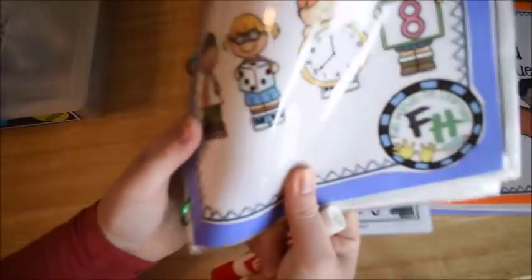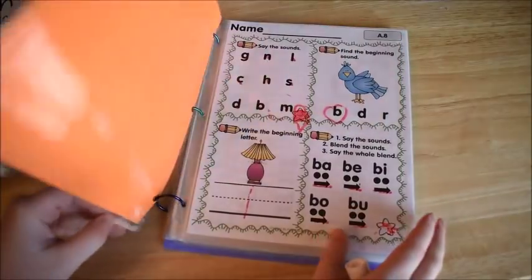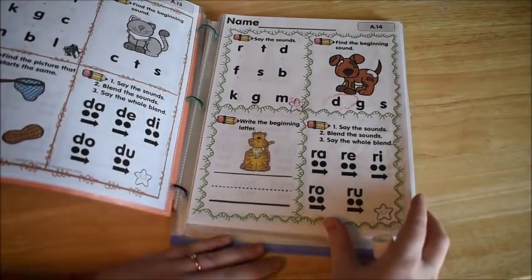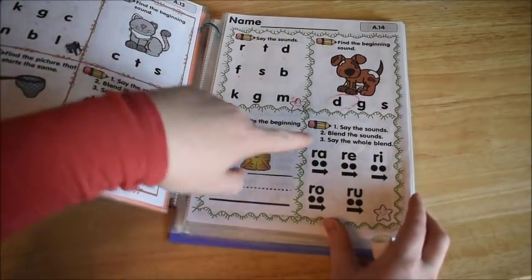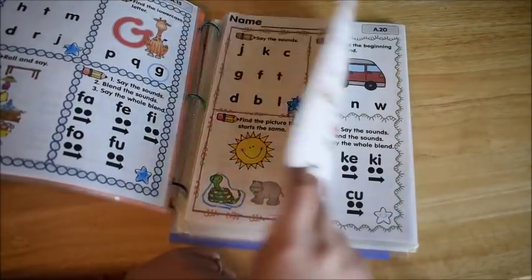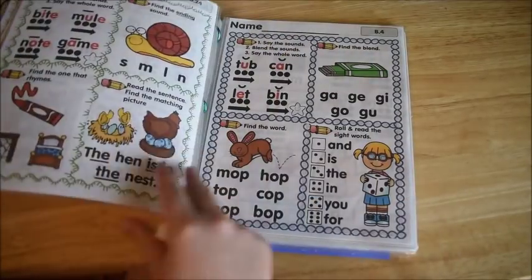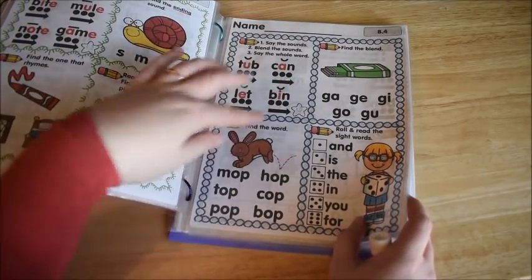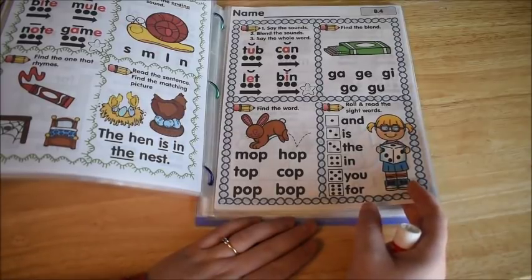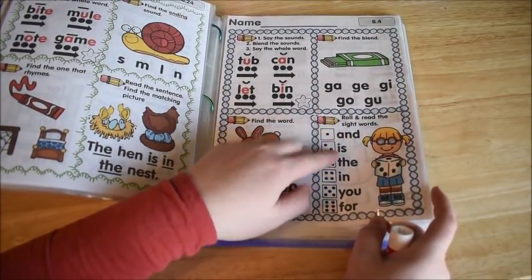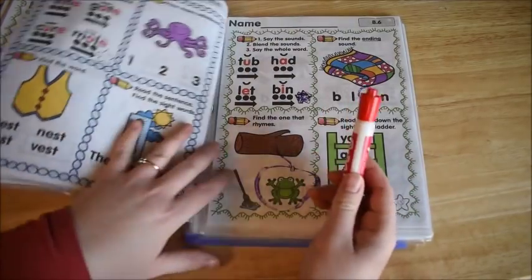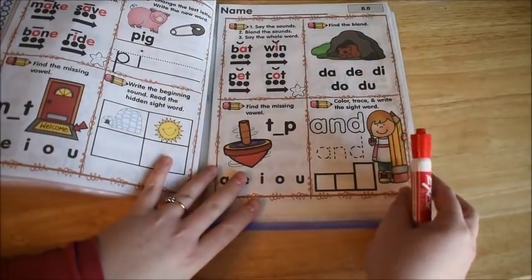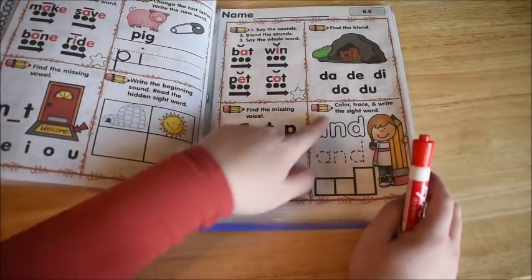And then the reading one, I'm not gonna go into too much, but just to show you the reading one is the same way. So you do four skills a day and you can see level A is really easy. They just say the sounds, they find beginning sounds, and then they do some blending, things like that. And then level B gets a little bit more intense. Here you can see level B where they're reading short vowel words, and they're finding blends and they're finding words that match pictures. Some of it's a little bit interactive, like you can use dice and things like that. But for the most part, all you need is a dry erase marker to do these pages.